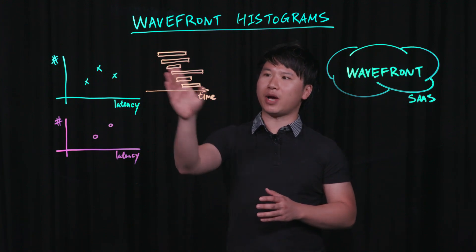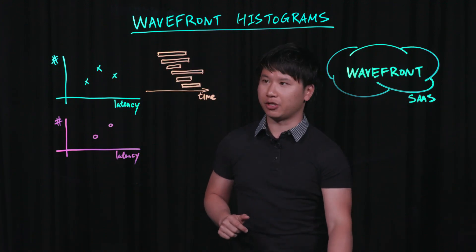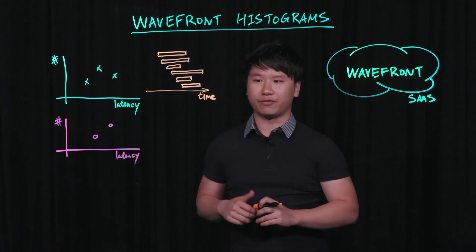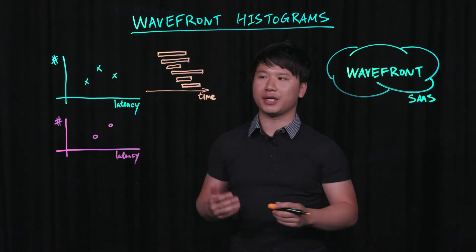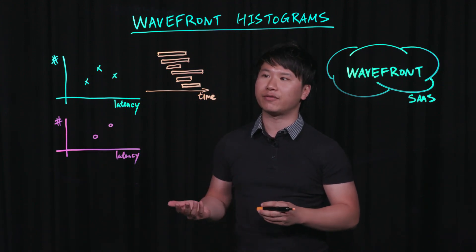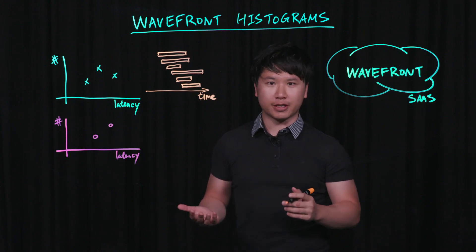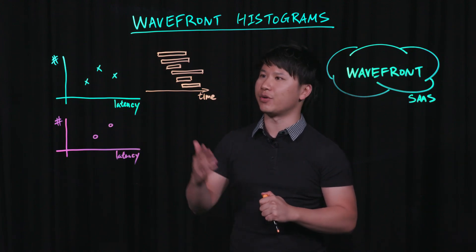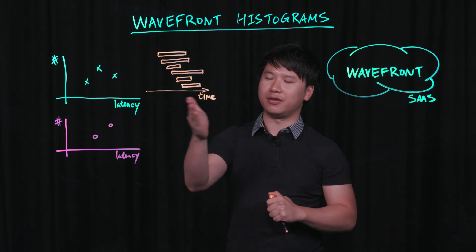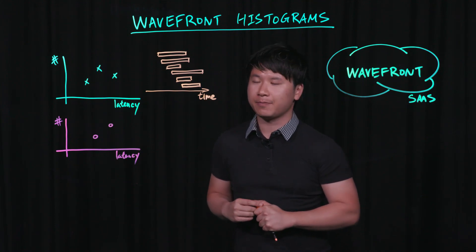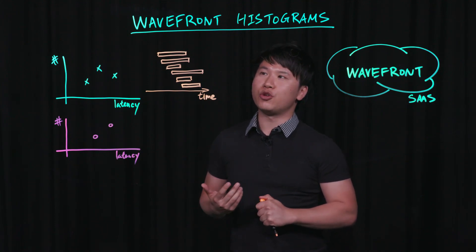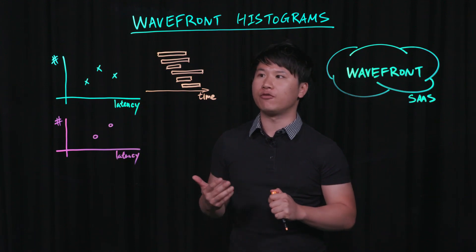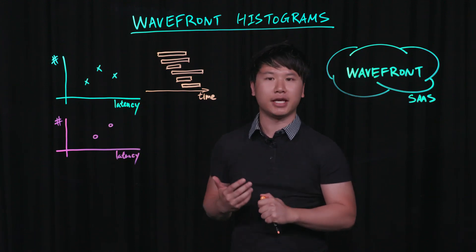Imagine you have requests of different sizes — request and response sizes — and they could have different latencies. In a traditional system, you may be counting the number of requests. In this particular example, at the end of time you would have six requests. Or you may use something like DropWizard metrics, or even Prometheus, and it would give you bucketed latencies — taking time intervals in milliseconds and bucketing them into exponentially larger buckets: one to two milliseconds, two to four, four to eight, eight to 16.